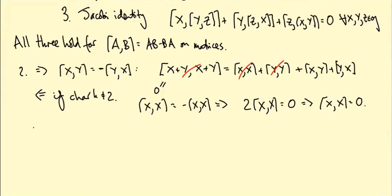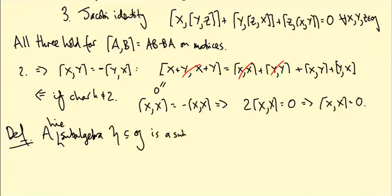Just one more thing. So definition. A sub-algebra or Lie sub-algebra H inside G is just a subspace of G. Such that, for all x and y in little h, the bracket of x and y is also in h. So that then, if you restrict the bracket to just elements in h, you stay inside h. So that's what it means to be a sub-algebra.